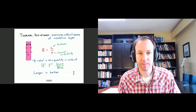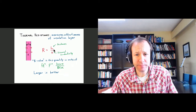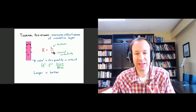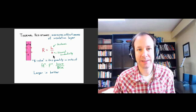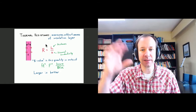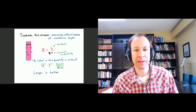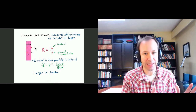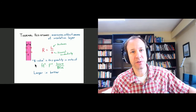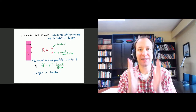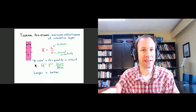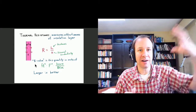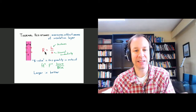When talking about insulation, both thickness and thermal conductivity matter. It's convenient to define their combination as the thermal resistance — this quantity is higher for a good insulator and lower for a good conductor. It's a measure of the effectiveness of an insulation layer. When you go to a hardware store like Home Depot and look at insulation for your home, you'll see an R-value listed for various insulation products.